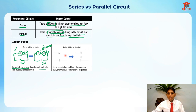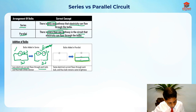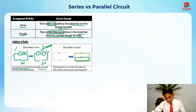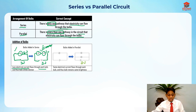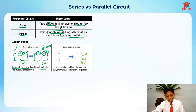For a parallel circuit, when bulbs are added in parallel, there is more than one pathway. Each pathway is effectively its own circuit. If the battery is two volts, each bulb receives two volts because the bulbs don't need to share the battery's electricity. However, a disadvantage is that the lifespan of the battery decreases — it won't last as long.